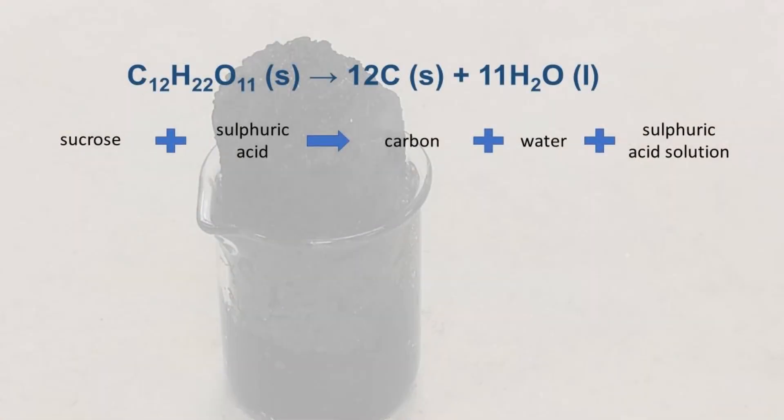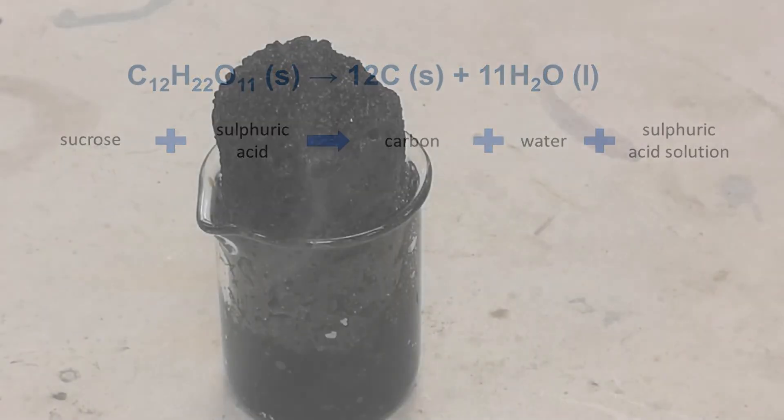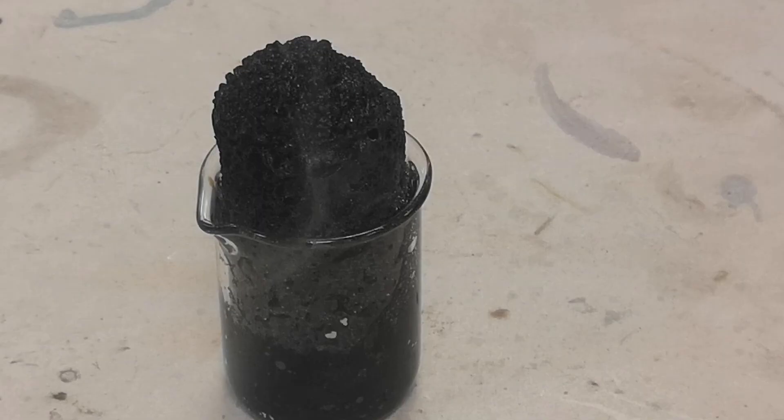it begins to remove water from the sugar molecules to give water and pure carbon. Sulfuric acid produces a lot of heat in contact with water, so as the reaction proceeds, the water produced heats the acid, producing more water and more heat in an example of what we call positive feedback.